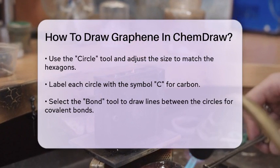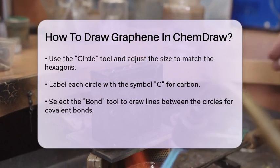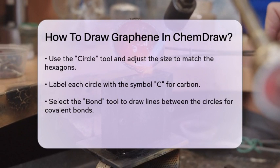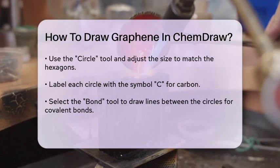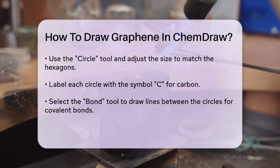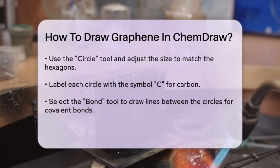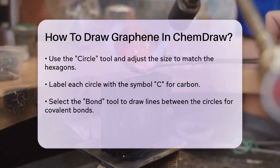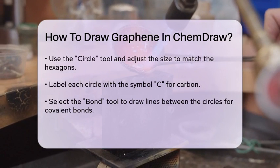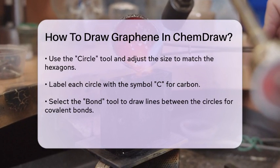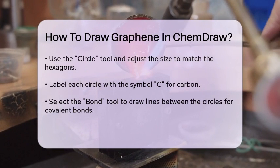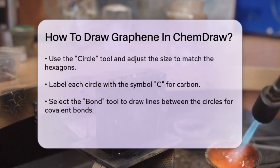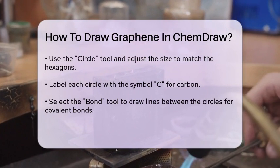To give your drawing a more polished look, consider adding bonds between the carbon atoms. Select the Bond tool and draw lines between the circles to represent the covalent bonds that hold the carbon atoms together in the graphene structure. Ensure that each carbon atom is connected to three neighboring atoms, which reflects the actual bonding in graphene.